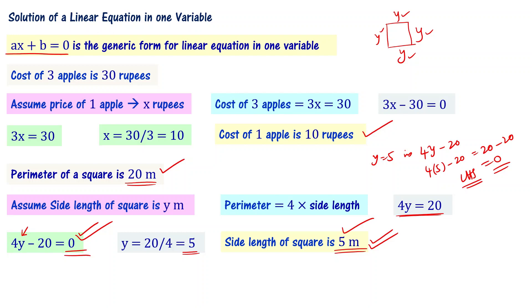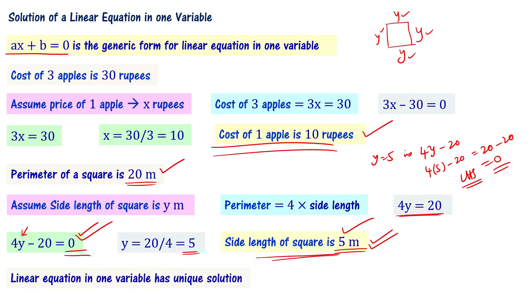We are getting only one solution for each equation — 10 rupees and 5 meters respectively. So a linear equation in one variable has a unique solution. Now, a linear equation in two variables has different behavior, and you have to understand this. Let's go back to the solution of a linear equation in two variables.